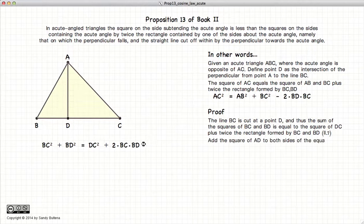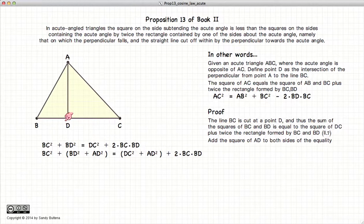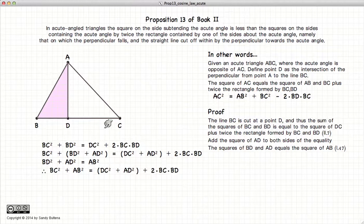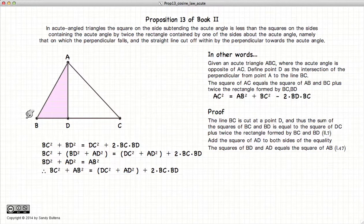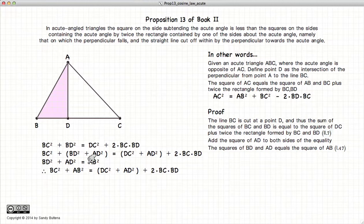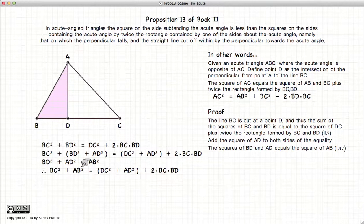Now the next thing we're going to do is add the AD squared to both sides of the equation, so the equality still holds. But what is BD squared plus AD squared? If we look at our little pink triangle, according to Pythagoras, BD squared plus AD squared equals AB squared. Substituting AB squared for this part of the equation, we have a new equality that still holds.